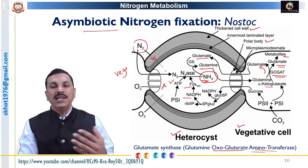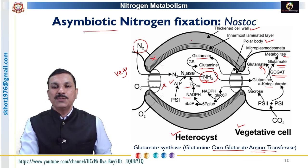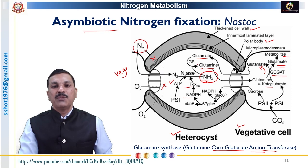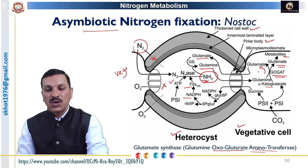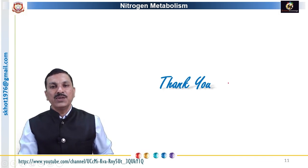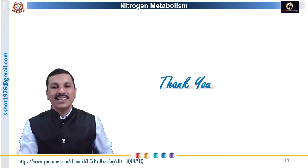In this way, in free-living diazotrophs, nitrogen is fixed in a specialized cell called the heterocyst, where anaerobic conditions are maintained by the thick cell wall. The fixed ammonia is harvested through the coupled action of glutamine synthetase and GOGAT enzymes. This is all about asymbiotic nitrogen fixation. See you in the next video where we will discuss symbiotic nitrogen fixation. Till then, take care. Thank you.